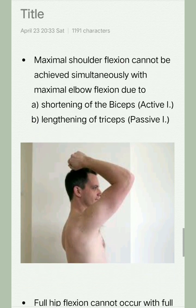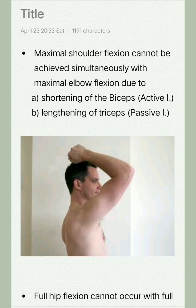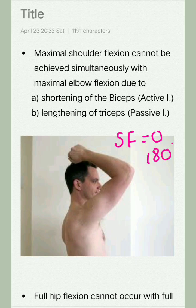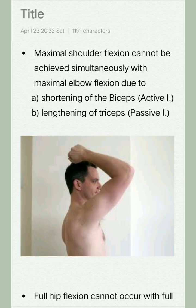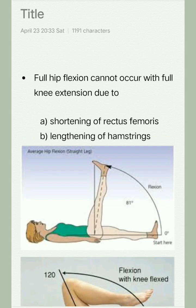In this image, shoulder flexion should be about 0 to 180 degrees while elbow flexion should be about 0 to 135 degrees, and you will see that neither is fully achieved simultaneously.